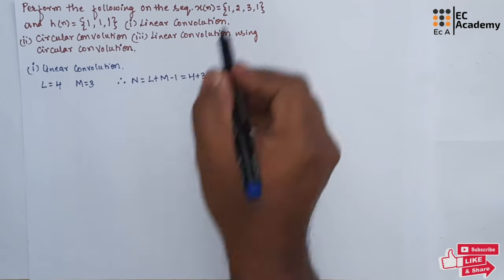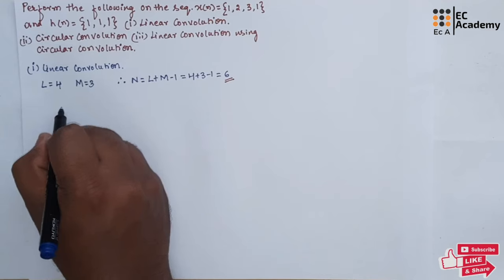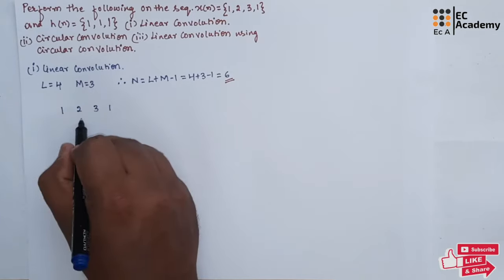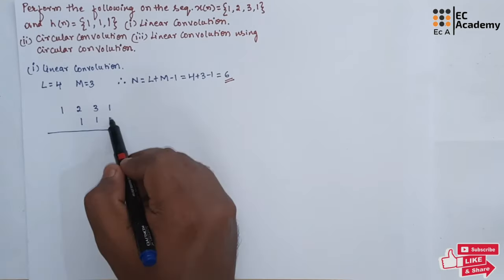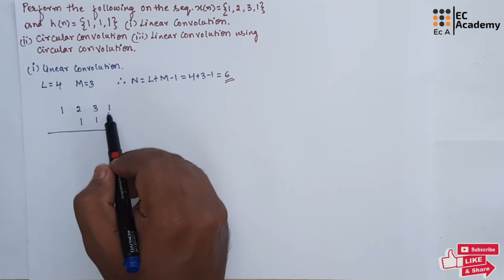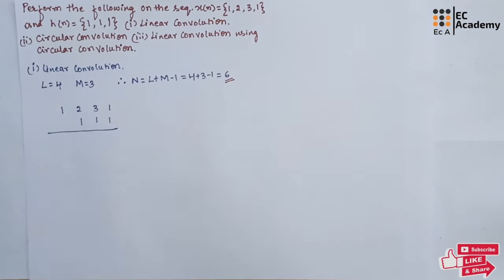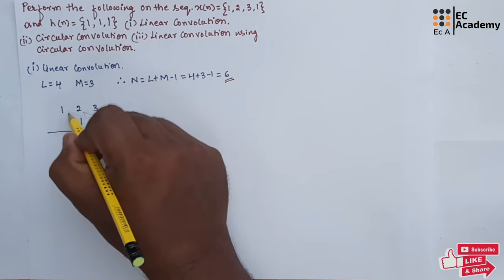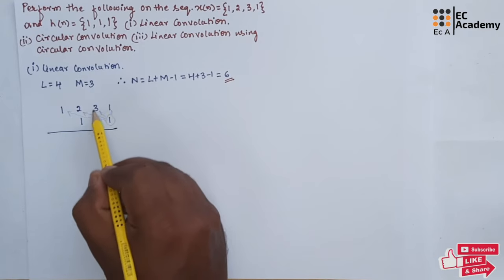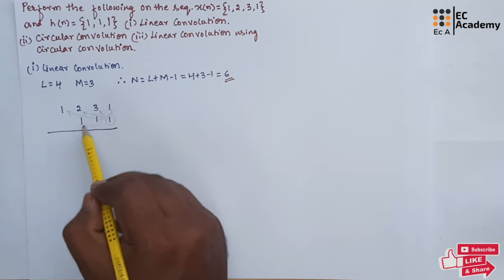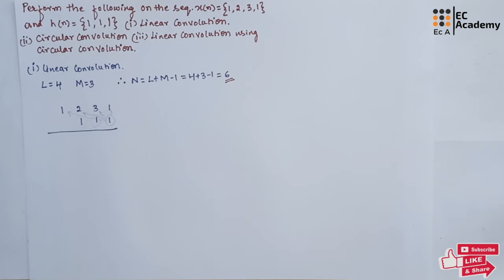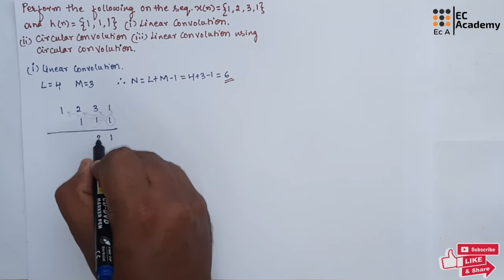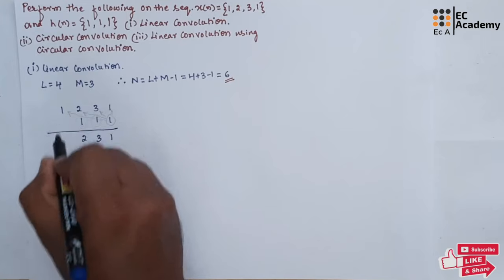To perform linear convolution, let us take the sequence x of n and write 1, 2, 3, 1. Below this we will write the sequence h of n: 1, 1, and 1. We will multiply each sample of h of n with the samples of x of n. So 1 will be multiplied with 1, then 3 will be multiplied with 2, then it will be multiplied with 1. Taking 1 into 1 is 1, 1 into 3 is 3, 1 into 2 is 2, 1 into 1 is 1.